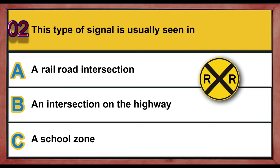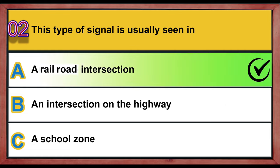Question 2. This type of signal is usually seen in: A. A railroad intersection. B. An intersection on the highway. C. A school zone. Correct answer is A: A railroad intersection.